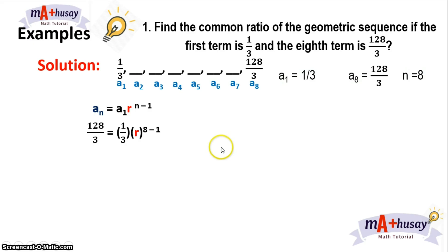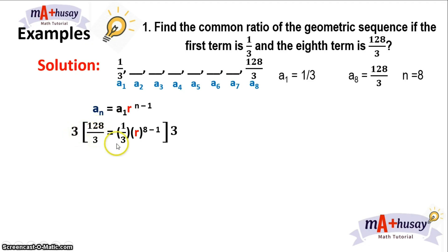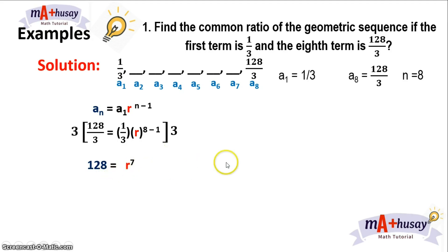We have 128 over 3 equals one-third times r raised to 8 minus 1. To solve for r, we multiply both sides of the equation by 3 to eliminate the fractions. So 3 times 128 over 3 — the 3s cancel — and we get 128 equals r raised to 7.